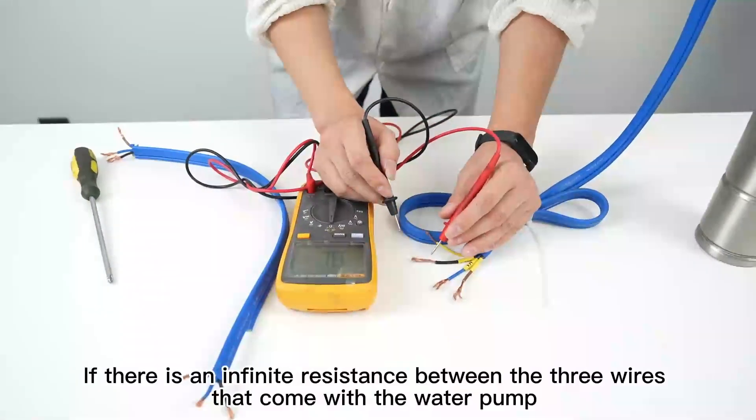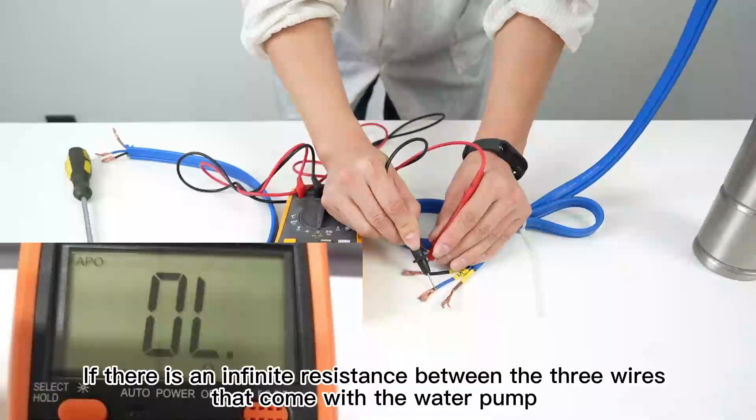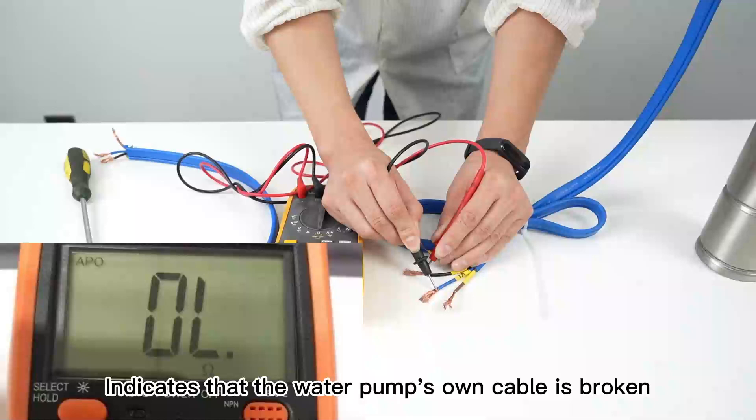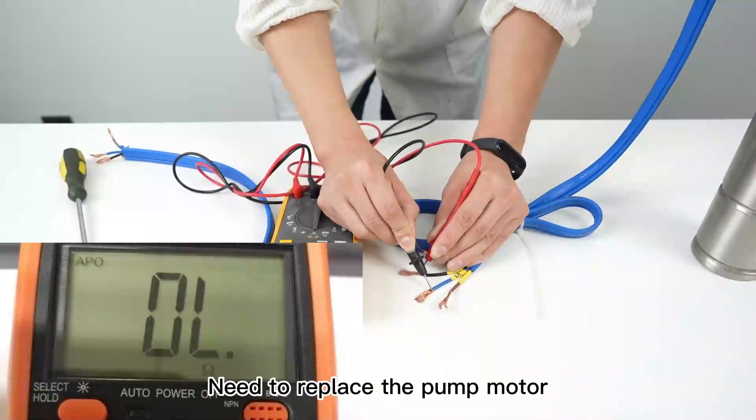If there is an infinite resistance between the three wires that come with the water pump, this indicates that the water pump's own cable is broken. Need to replace the pump motor.